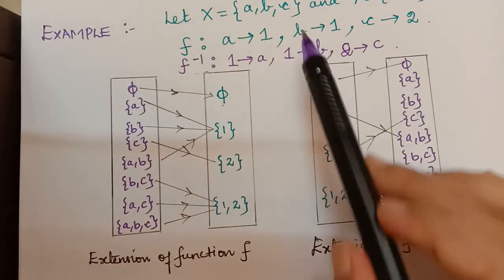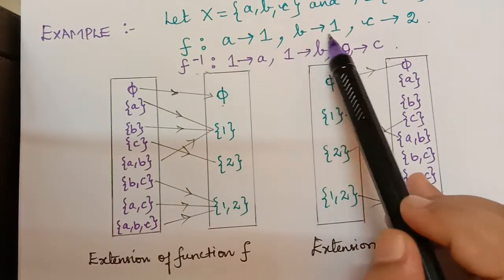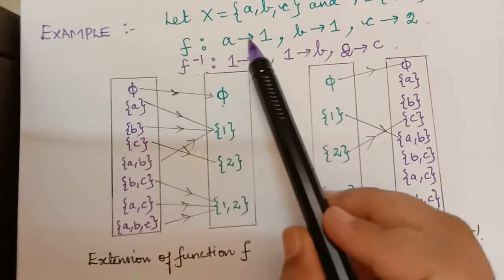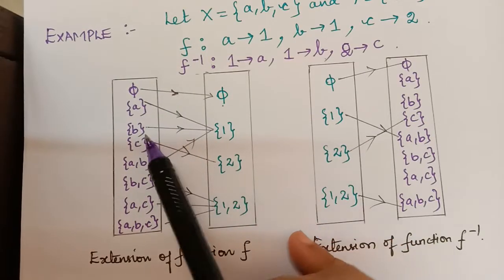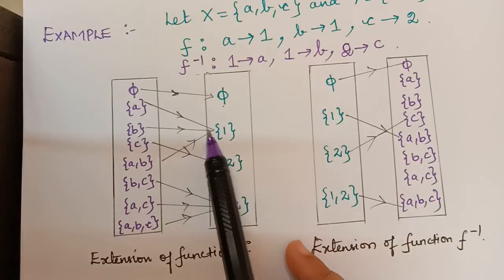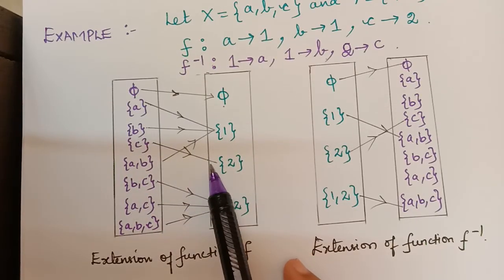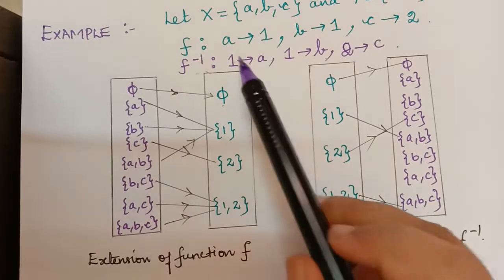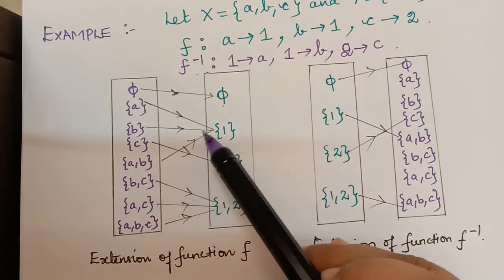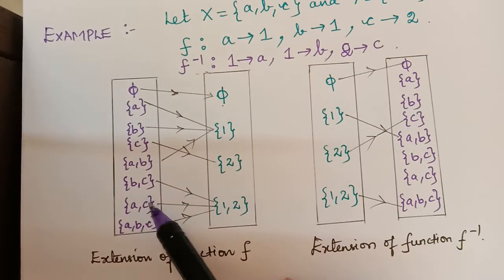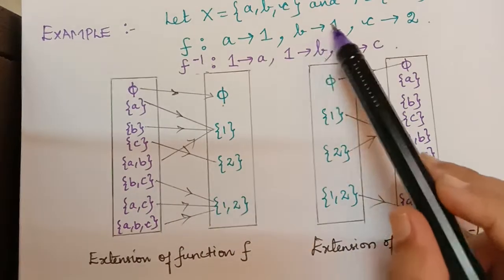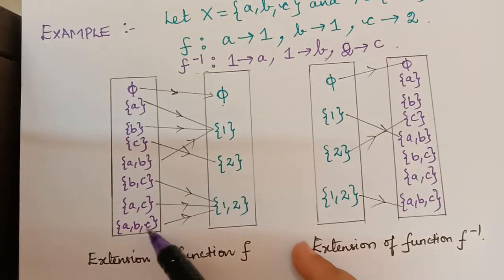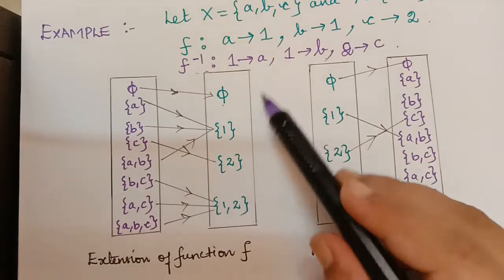Now we see the extension of function f. A is mapped to 1, B is mapped to 1, and C is mapped to 2. We can write subsets A and B separately: A maps to 1, B maps to 1, C maps to 2. The subset {A, B} is mapped to 1, since both A and B map to 1. Subsets {B, C} and {A, C} are mapped to {1, 2}, and {A, B, C} taken all together is mapped to {1, 2}.